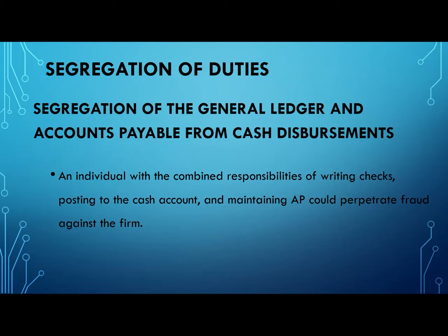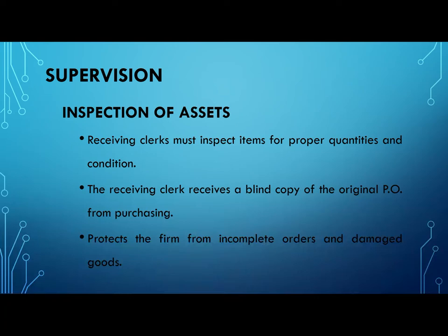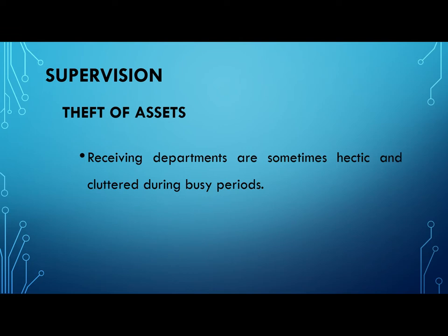The third control is supervision. Receiving clerks must inspect items for proper quantities and condition, which protects the firm from incomplete orders and damaged goods. Receiving departments can be overloaded with work, which can lead to lost assets. It is essential to keep an eye on goods even when the receiving department is busy, to avoid theft.